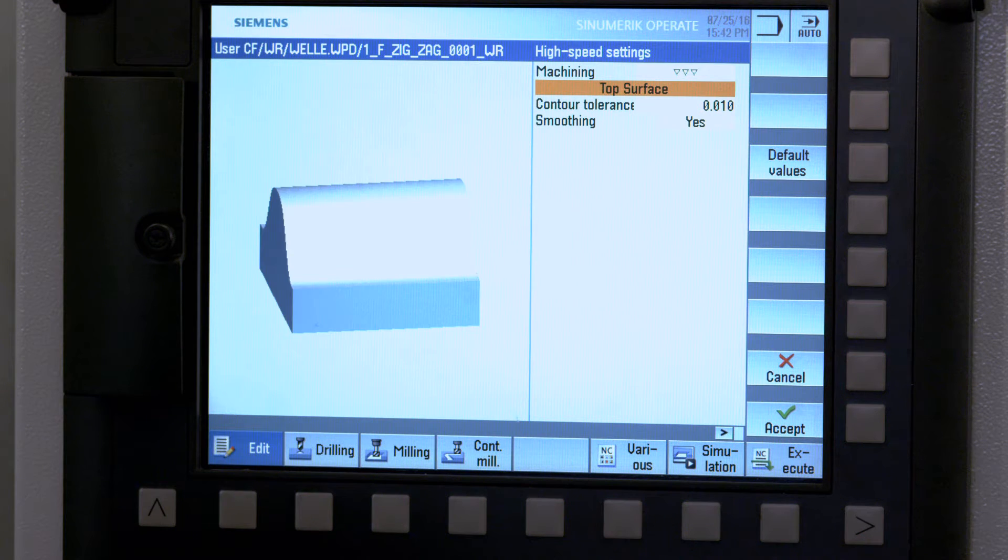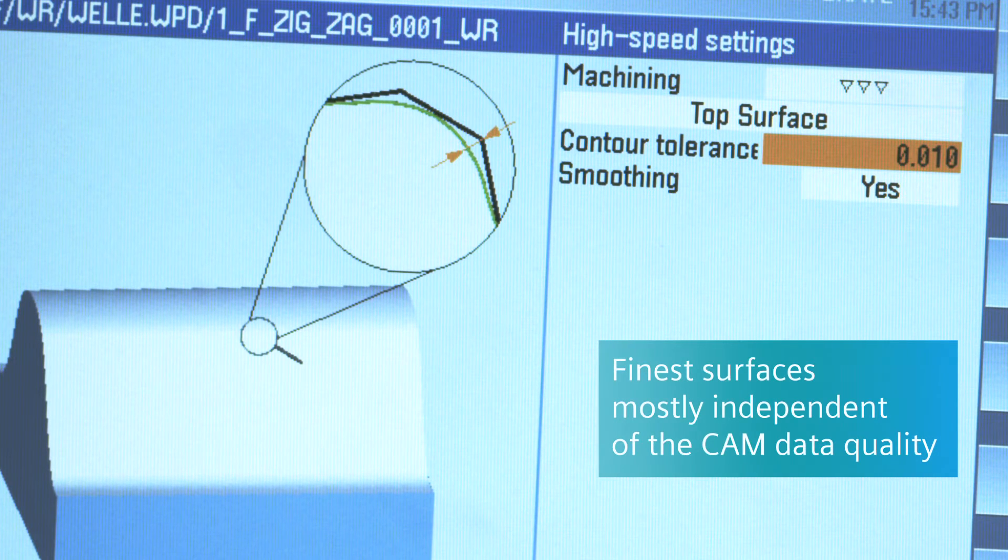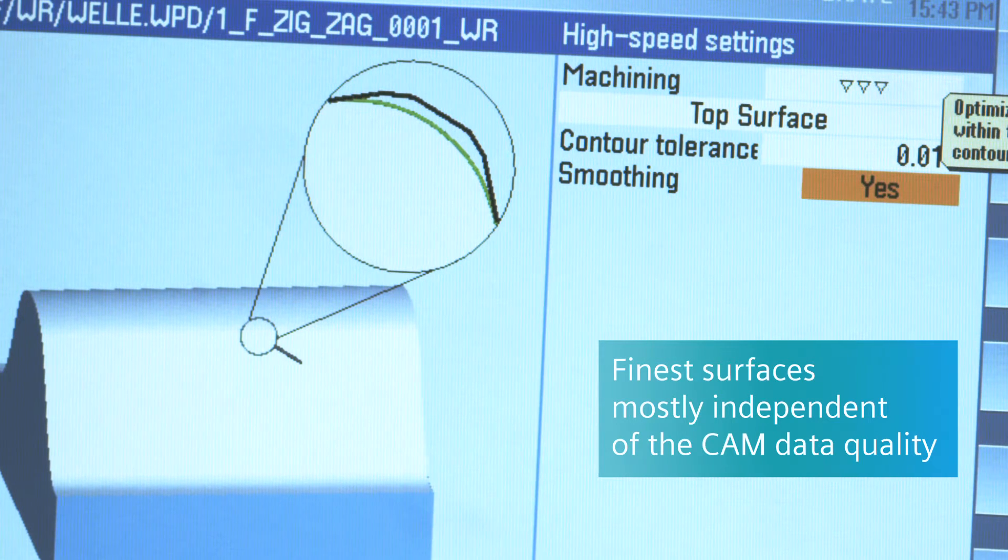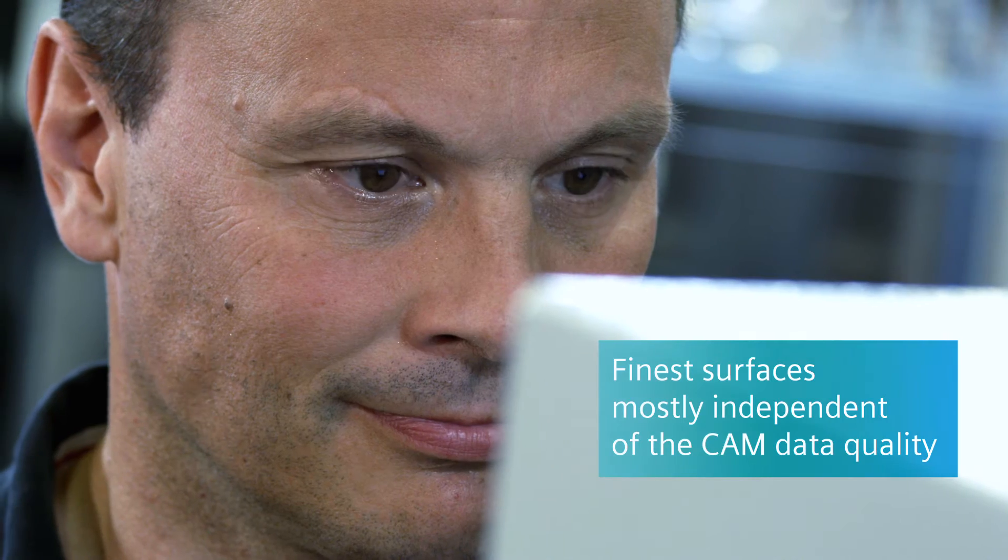The top surface function that can be selected in cycle 832 results in the finest surfaces, mostly independent of the data quality.